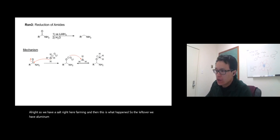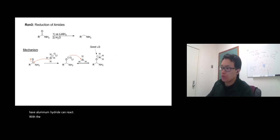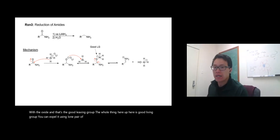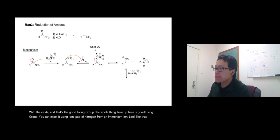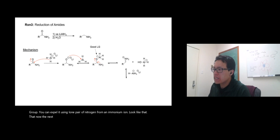...can react with the oxide, and that's a good leaving group. The whole thing up here is a good leaving group. You can expel it using the lone pair of nitrogen from an ammonium ion. Now the next molecule of lithium aluminum hydride will attack the ammonium ion and you get primary amine - that's how it works.